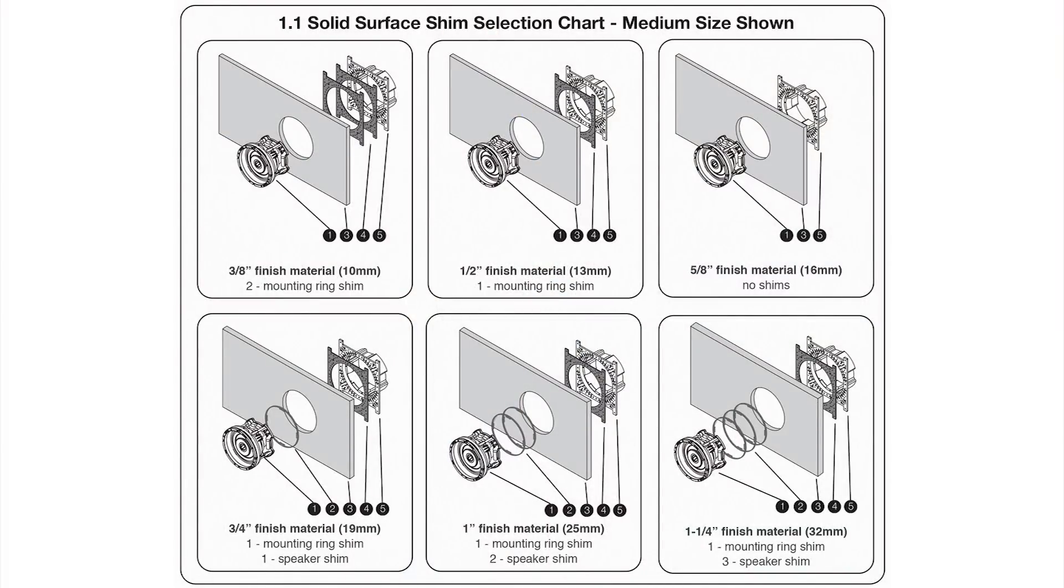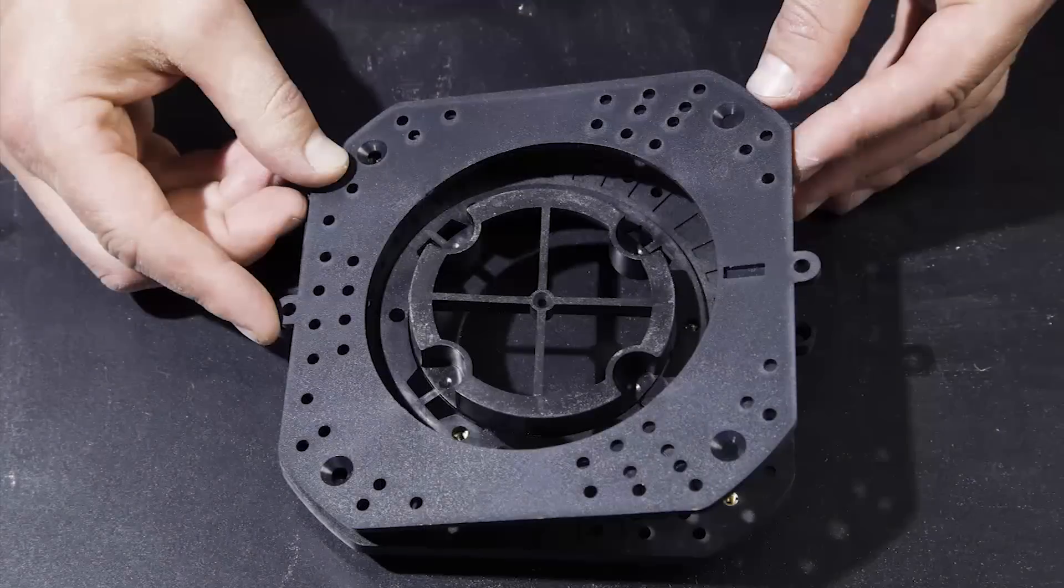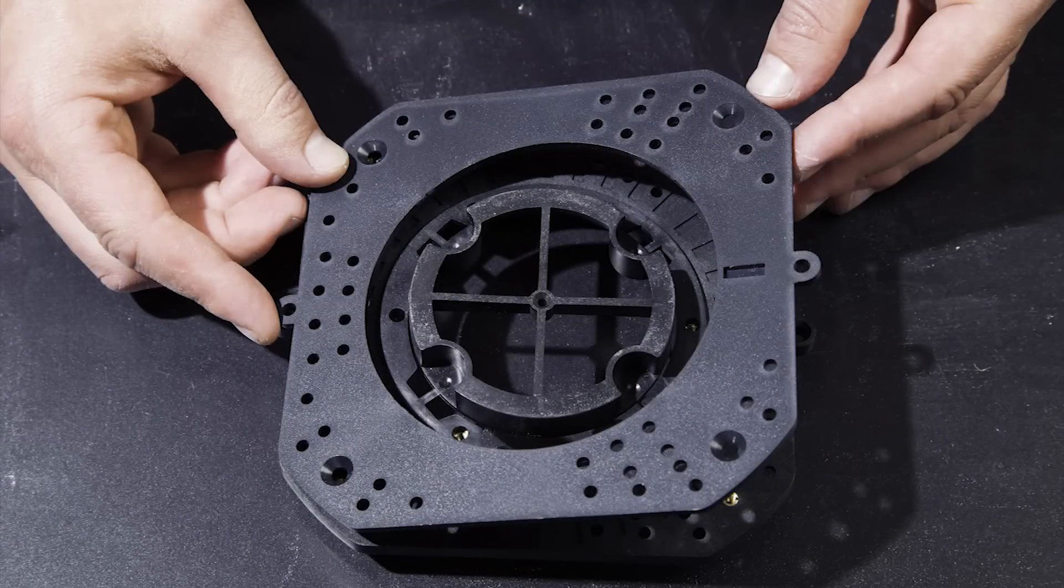If installing a connector into a solid surface material, make sure that the appropriate number of speaker shims are installed on the back of the speaker. If not installed, the speaker grill will be recessed in the opening.